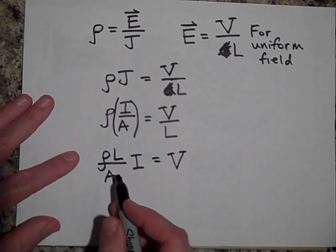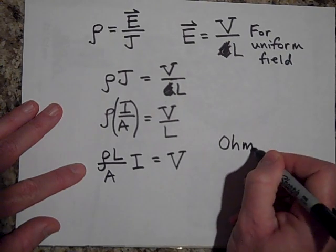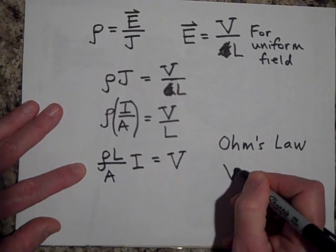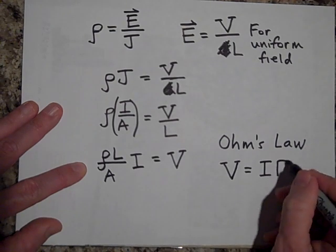Now do you remember last year there was a law called Ohm's Law that said that the voltage across a resistor was equal to the current through the resistor times the resistance of the resistor?